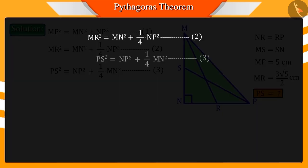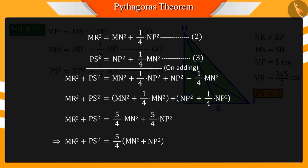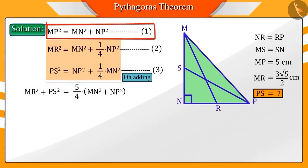By adding equations 2 and 3, we get this equation. Here, from equation 1, MN square plus NP square can be replaced by the square of MP. Can you tell us what we should do next?